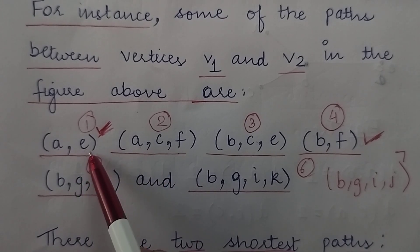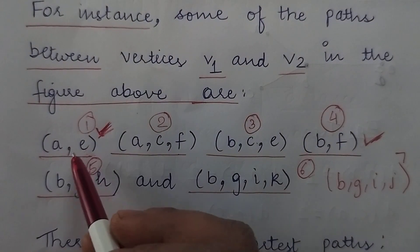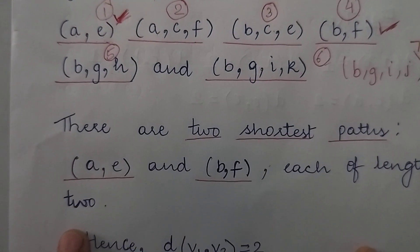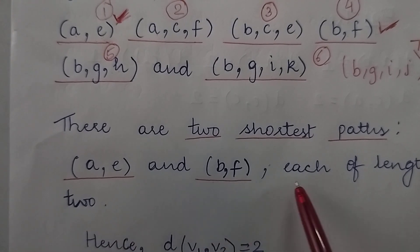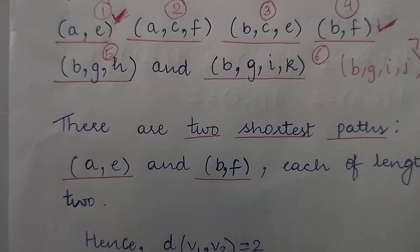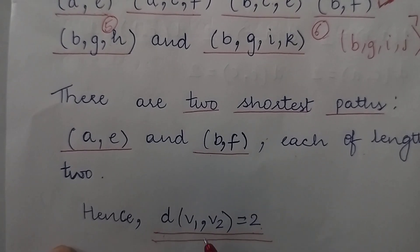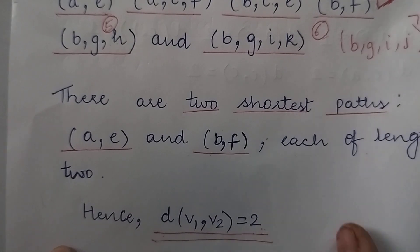There are only two paths where the number of edges is two, which is less than all other available paths. So I have two shortest paths: one is a, e and the other is b, f. Since there are two shortest paths a, e and b, f each of length two, the distance between vertex v1 and v2 is two — the length of the shortest path between v1 and v2.